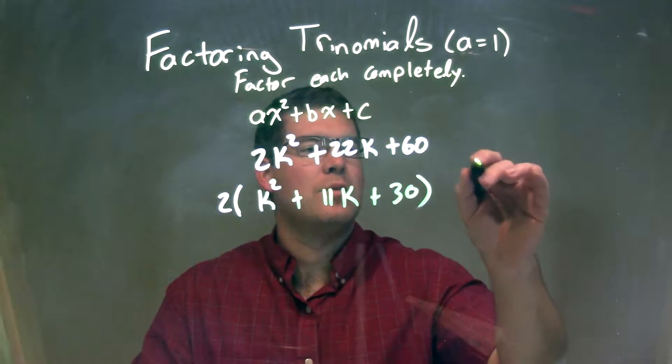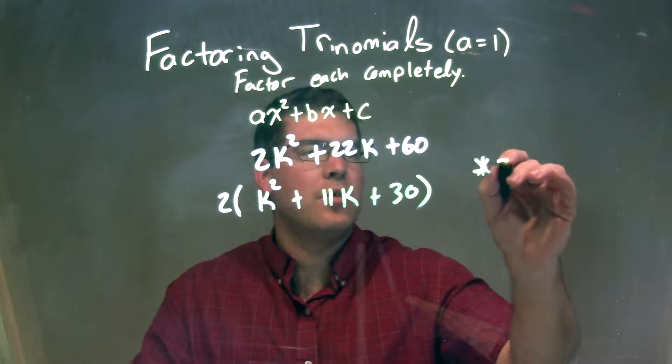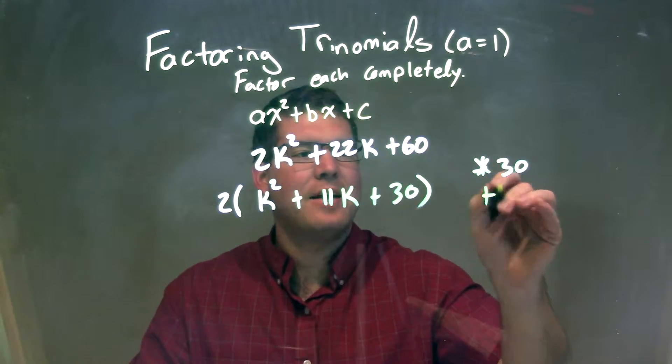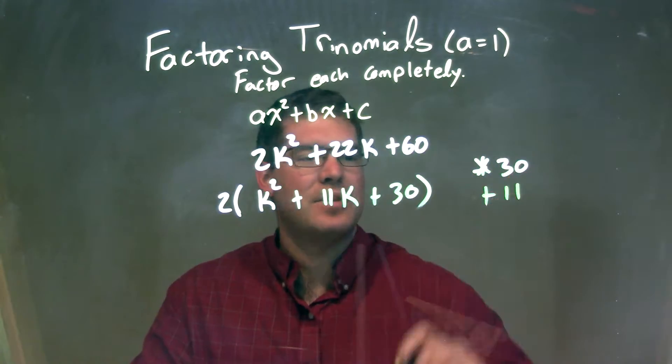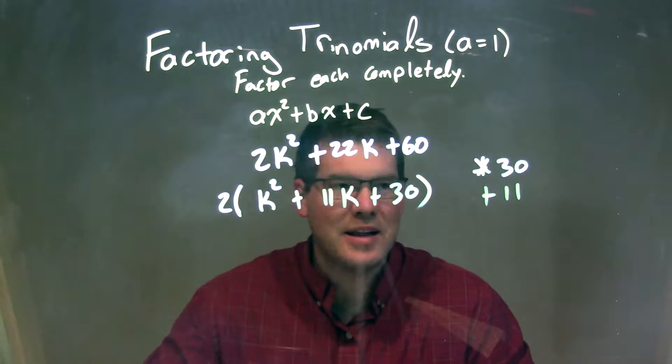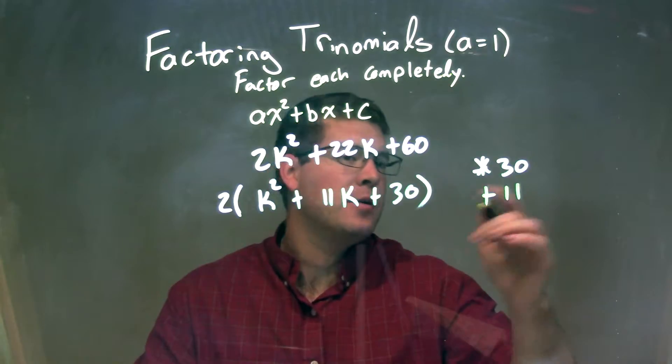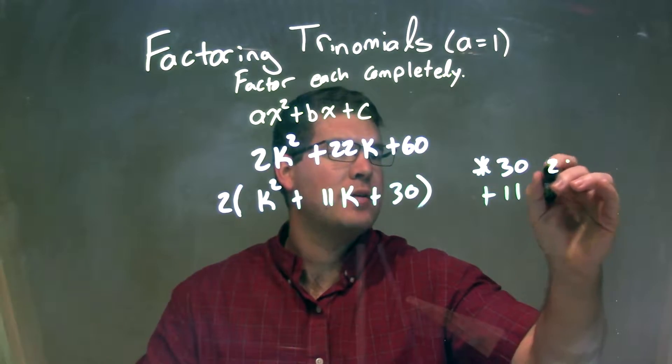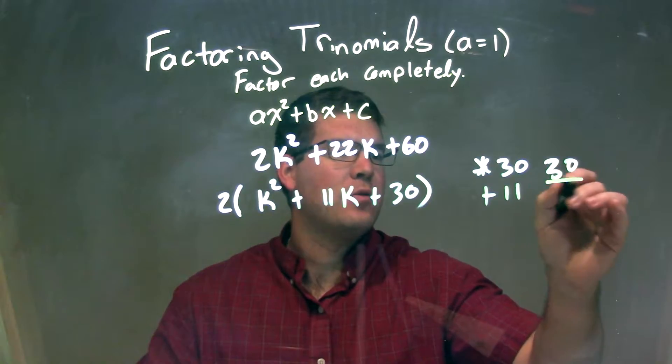So now I can ask myself the question, what two numbers multiply to be 30 but add to be 11? This was tricky. If you're struggling with this, what we can do is just break down what are the multiples of 30.